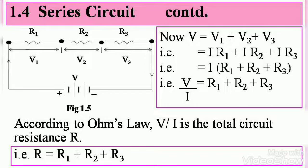That means V equals IR1 plus IR2 plus IR3, applying Ohm's law. If you take I as a common factor, you get I times R1 plus R2 plus R3.